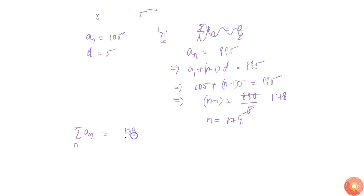We get sum of n terms is simply equal to n by 2, that is 179 by 2 into 2a plus (n-1)d. That is 179 by 2 into 2a, so this is simply equal to 210. This is equal to 179 by 2.